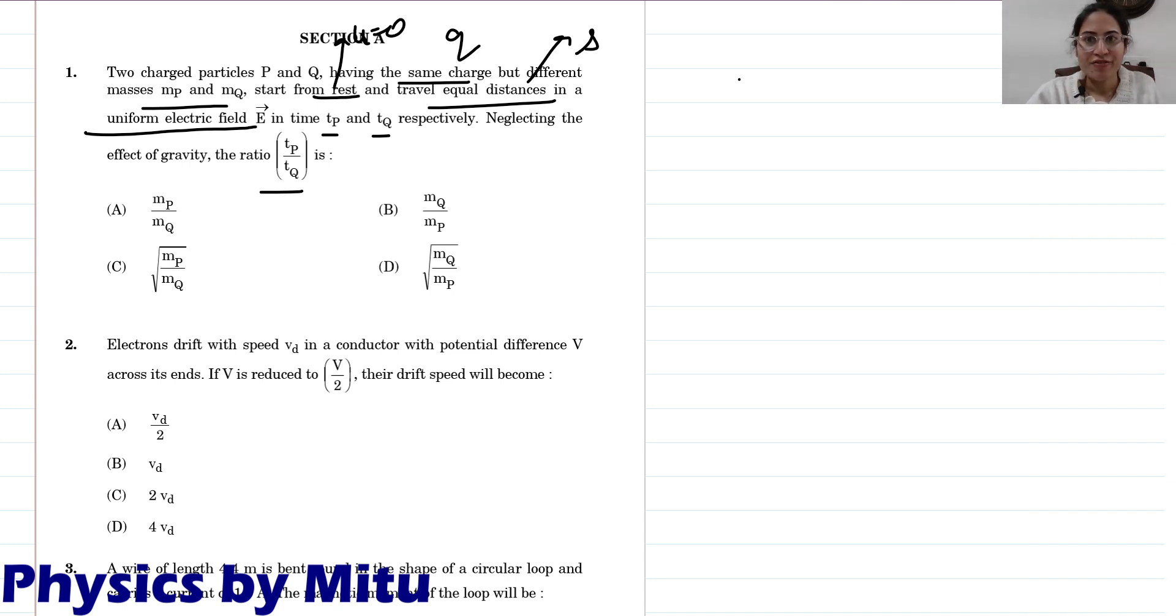Electric field may acceleration hota hai. You have to find the ratio of time. Distance equal travel kia hai, so s is equal to ut plus half a t square. U is zero given in question, a is force upon mass.